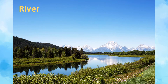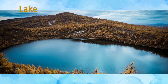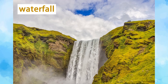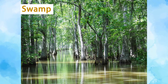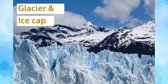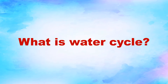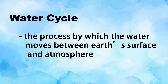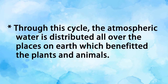Water is also found in rivers, lakes, falls, and swamps. Some water is frozen in glaciers and ice caps. What is the water cycle? The water cycle is the process by which water moves between Earth's surface and atmosphere.